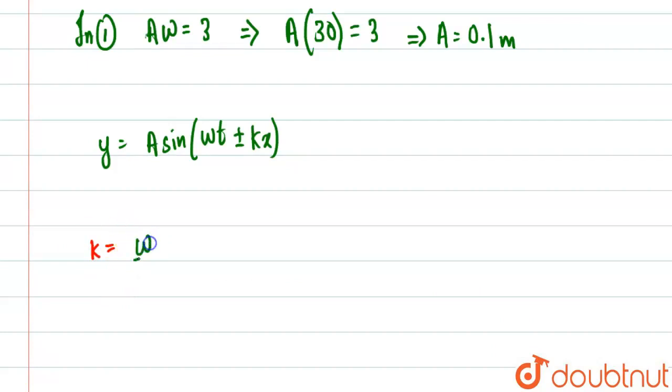K is given by ω divided by wave velocity v. So omega was found to be 30 and wave velocity was 20, so this will come out to be 1.5.